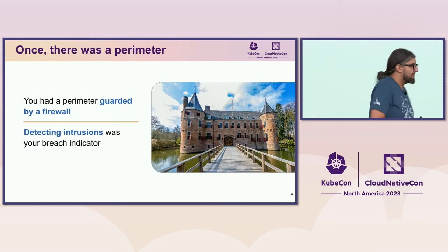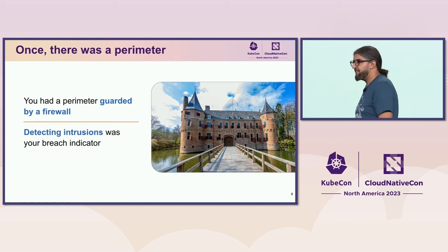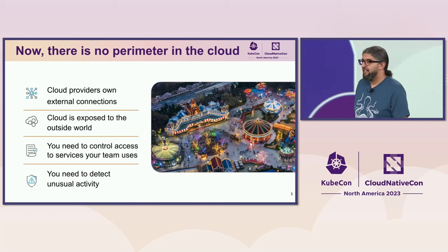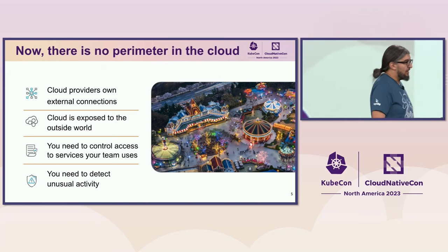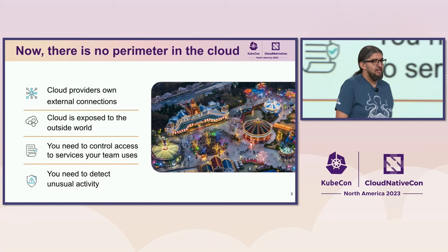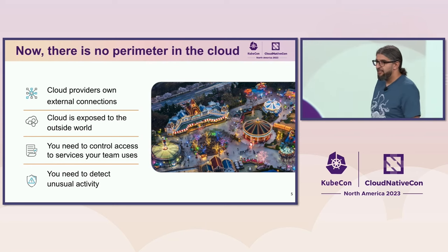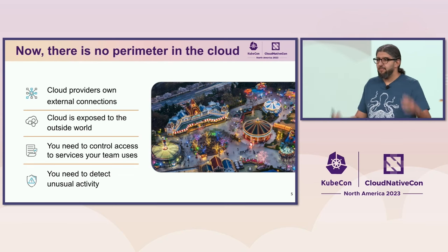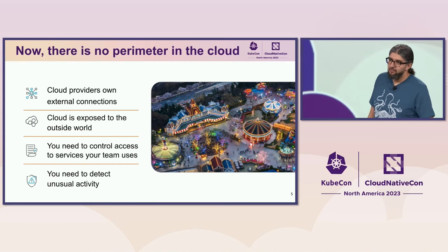At one time, it was quite simple to protect monolithic applications. They are deployed on a VM or physical servers, and what you need to do is just put a firewall or EDR in front of it to detect any intrusion. But this is totally different when it comes to the cloud — the cloud services are public, exposed to the outside world, you have different services living together in your cloud account, and you need to define the right access control for each team or service. This complexity of multiple services talking together can generate a lot of logs, and it can be really hard to detect unusual activity.